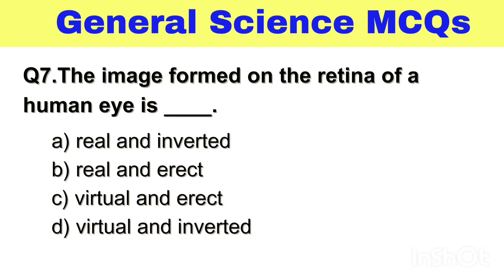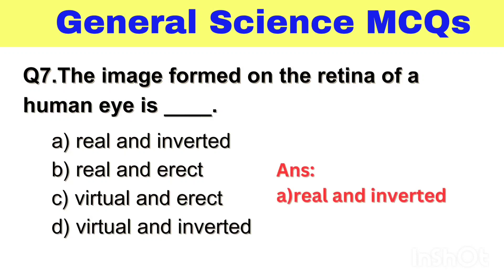Question No. 7. The image formed on the retina of the human eye is — Option A. Real and inverted, B. Real and erect, C. Virtual and erect, D. Virtual and inverted. The right answer, Option A. Real and inverted.